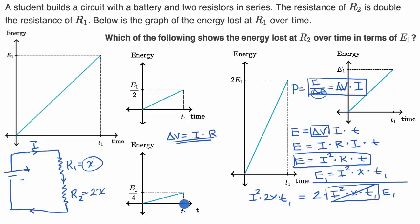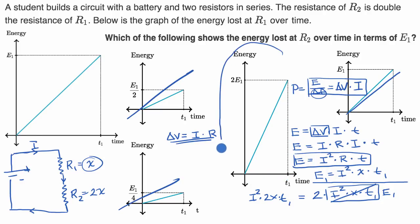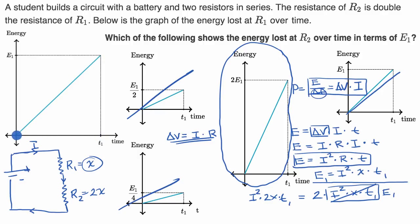At time T1, we want twice as much energy dissipated. The first option has only a fourth as much — rule that out. The second has half as much — rule that out. The third has the same amount — rule that out. The fourth option has twice as much energy dissipated at T1, so we select that one. Another way to think about it: with the same current and twice the resistance, you dissipate twice as much energy in any given time — the graph has twice the slope. From time zero to T1, instead of E1, you dissipate 2E1.